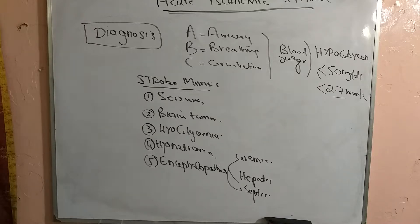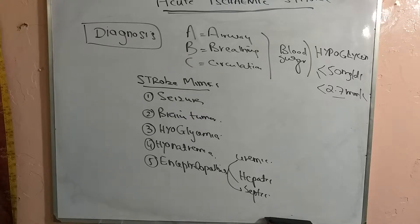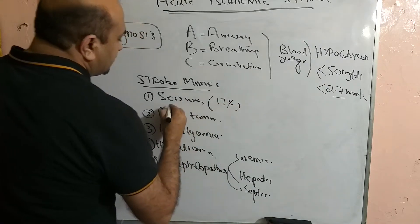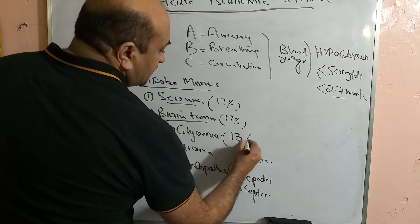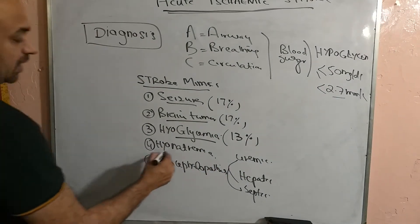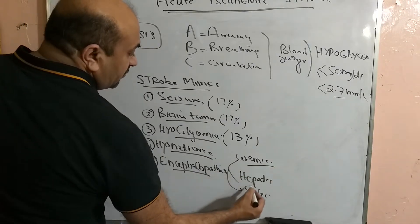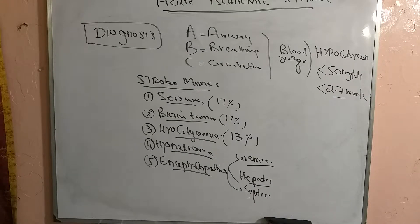We must always check blood sugar. If blood sugar is less than 50 mg/dL or less than 2.7 mmol/L, the patient can present with symptoms mimicking acute ischemic stroke — this brings us to stroke mimics. Seizures present like stroke 17% of the time, brain tumors also 17%, hypoglycemia 13%, and hyponatremia and encephalopathy — uremic, hepatic, and septic — can all present with signs and symptoms of acute ischemic stroke.